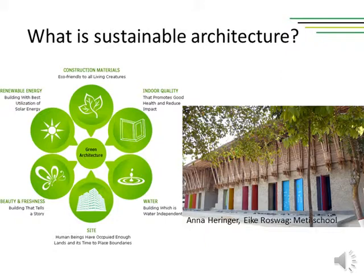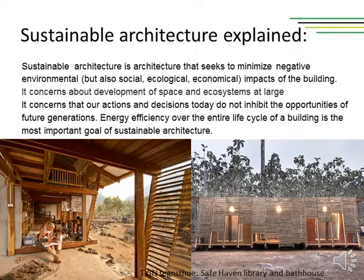The first example shown on the right picture is Anna Herringer's and Ike Rozwak's handmade school in Bangladesh. Sustainable architecture, explained according to Wikipedia, is architecture that seeks to minimize negative environmental but also social, ecological and economical impacts of the building. It concerns about development of space and ecosystems at large, and that our actions and decisions today do not inhibit the opportunities of future generations.